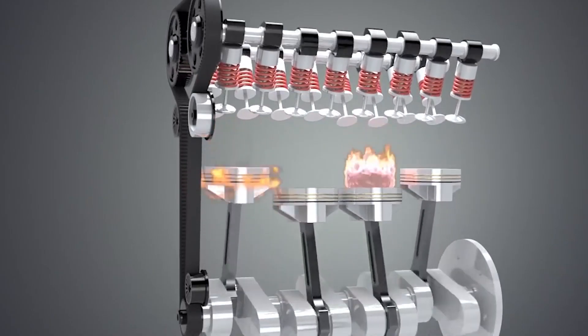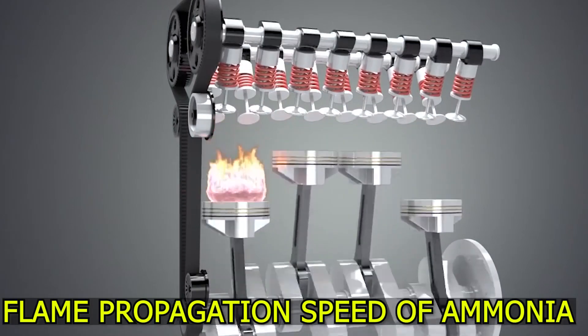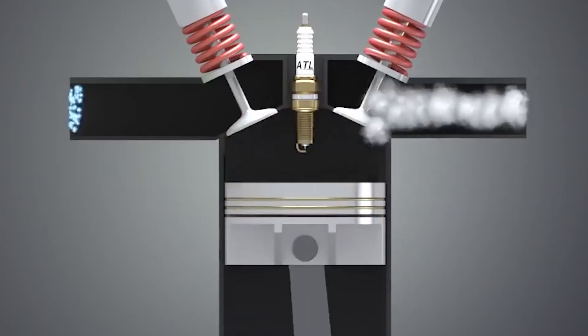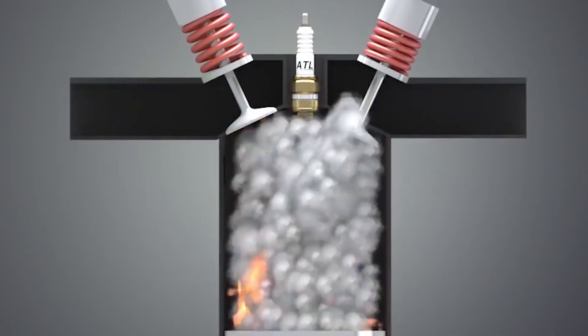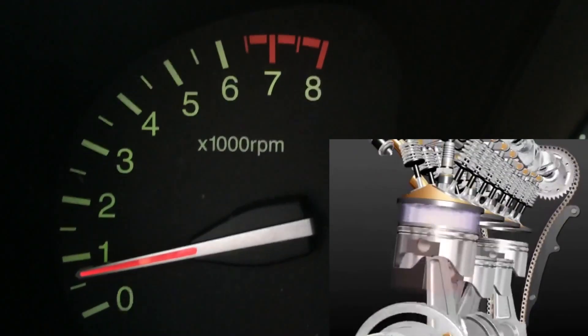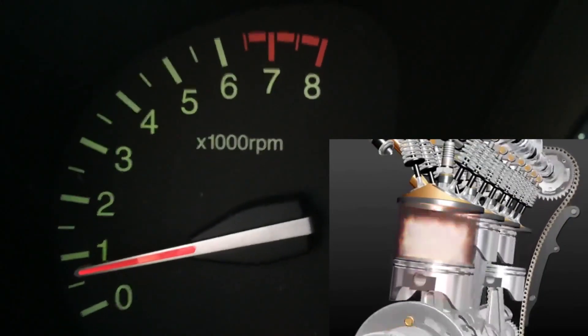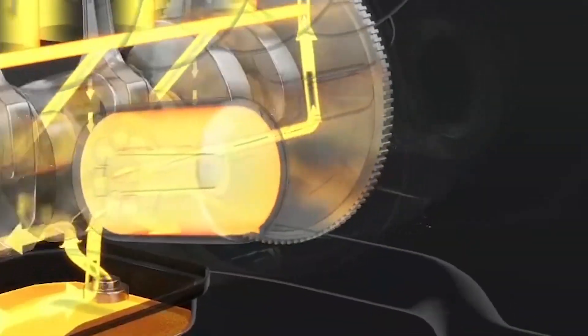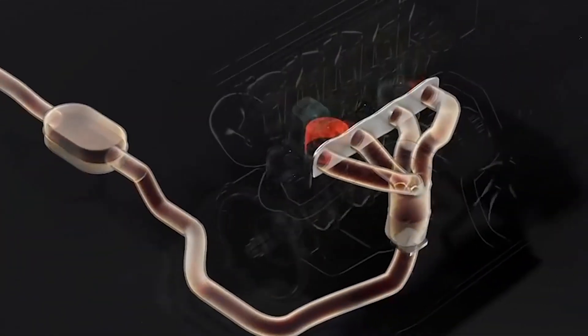Another critical challenge is the relatively slow flame propagation speed of ammonia compared to conventional fuels. This characteristic poses inherent difficulties in achieving optimal combustion efficiency, particularly under high engine speeds, RPMs, or during periods of low engine loads. The slower flame propagation speed can lead to incomplete combustion, potentially resulting in reduced power output and hindering overall engine performance.